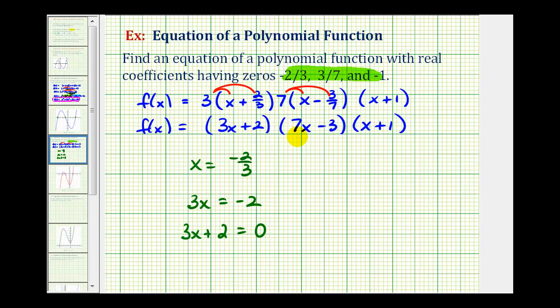And the same thing for x = 3/7. Knowing this is a zero, we could multiply both sides by seven. That would give us 7x = 3, subtract three, and we have 7x - 3 = 0. So 7x - 3 would have to be a factor. So there are several ways to come up with a factor that doesn't contain fractions when our zero is a fraction.